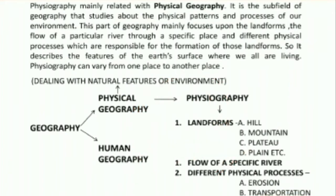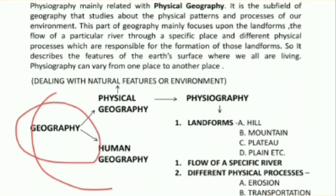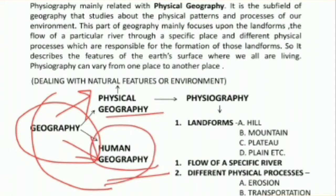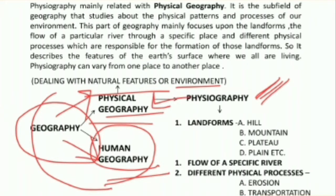Now let's understand the physiographic concept with the help of a diagram. First we have geography, which is subdivided into two parts: physical and human. Human geography is not important for this session, so skip it. Physical geography, from the term itself, deals with natural features or environment. Physiography is related with physical geography and focuses mainly on different kinds of landforms.